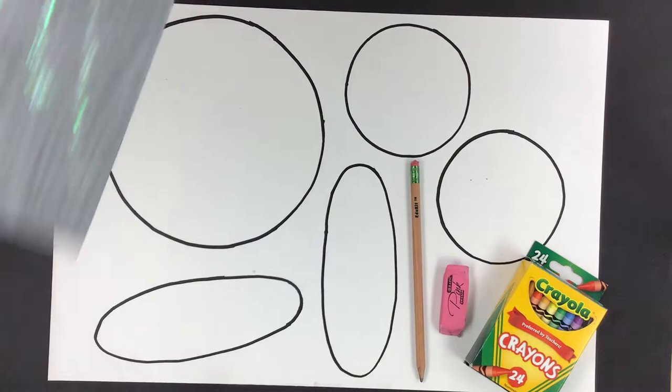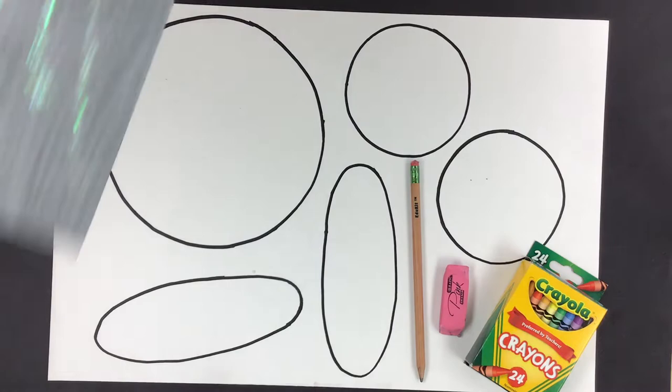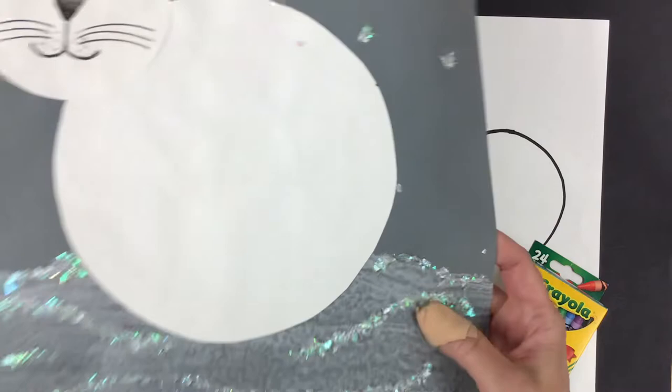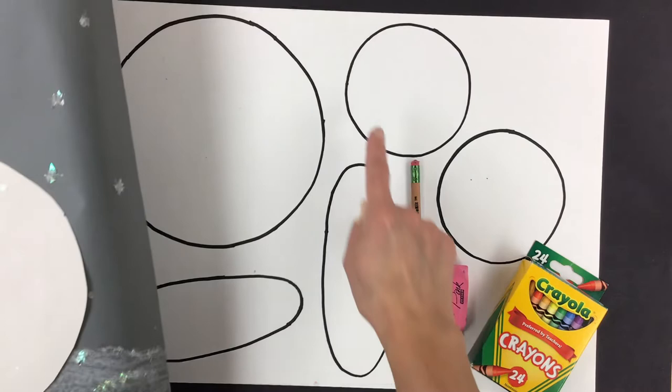Let's talk about what these shapes are. The first shape is the big circle that you see right here. This big circle is going to be the body of our Arctic Hare. Then you'll see two circles that are smaller.